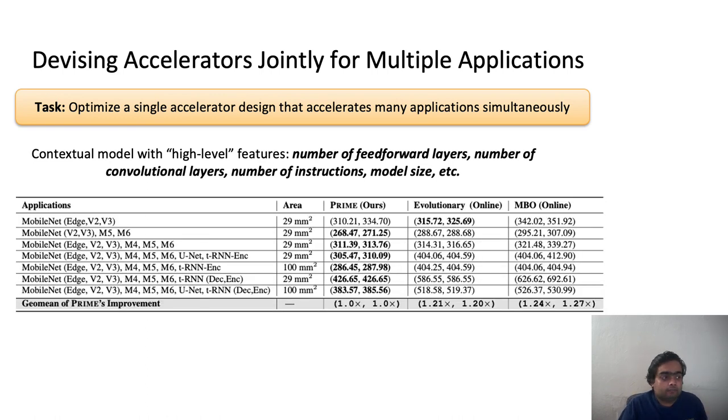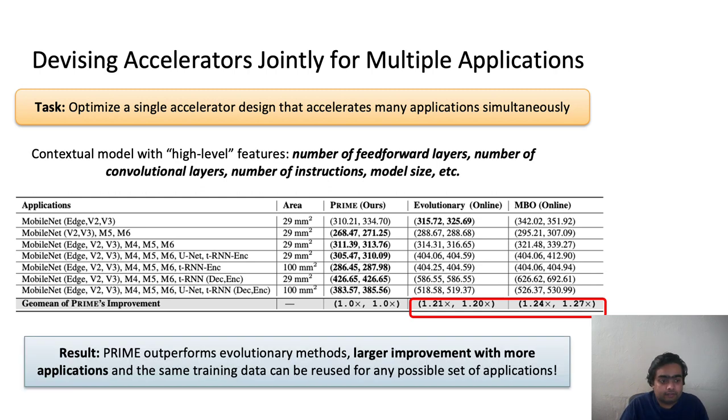Now when we optimize this contextual model for a given set of applications together, which you see in this table, the leftmost column, again, turns out that PRIME is much better than evolutionary or model-based optimization algorithms which actually interact with the simulator. In fact, turns out that there is much larger improvement when you have more applications in your training pool. So it's much more efficient in terms of actually scaling better with more applications. And you can reuse the same training data for all the applications. You don't need to retrain PRIME again in this case.